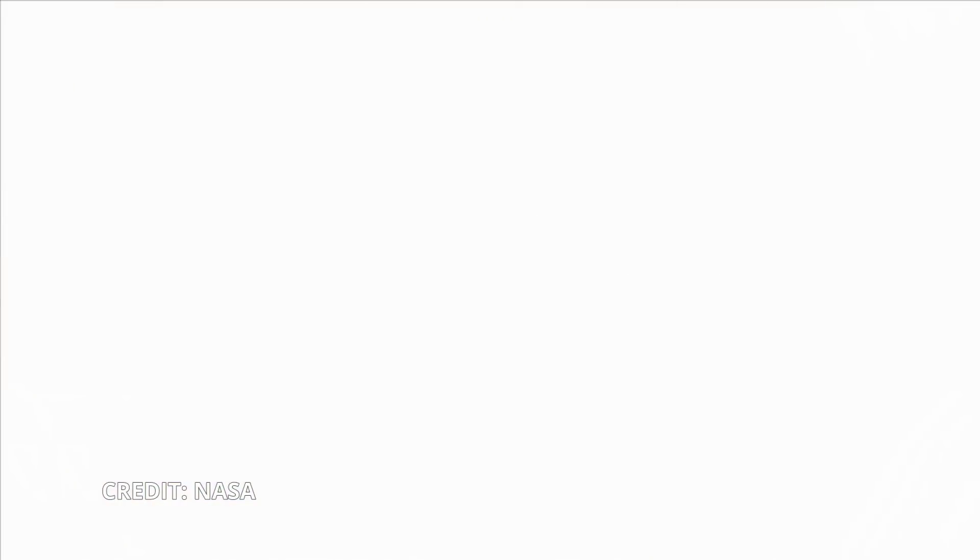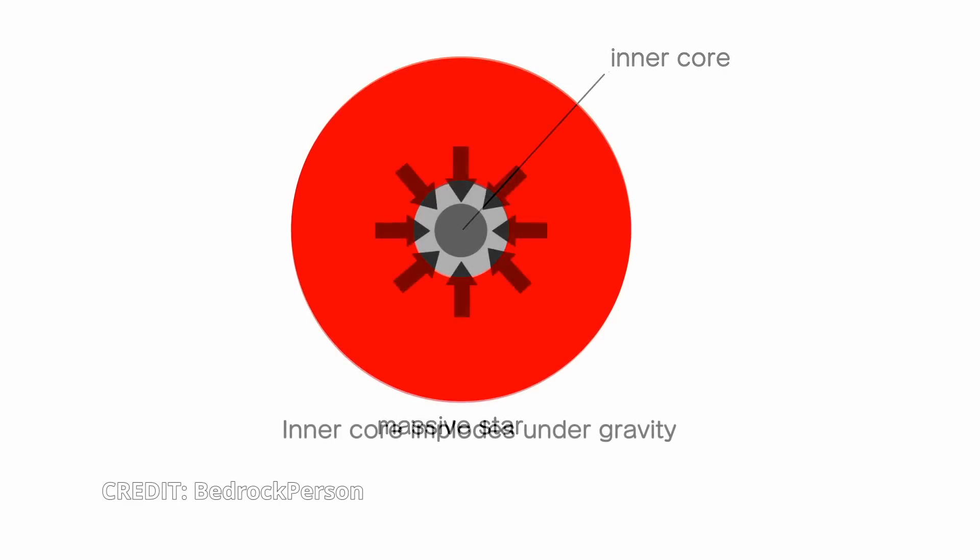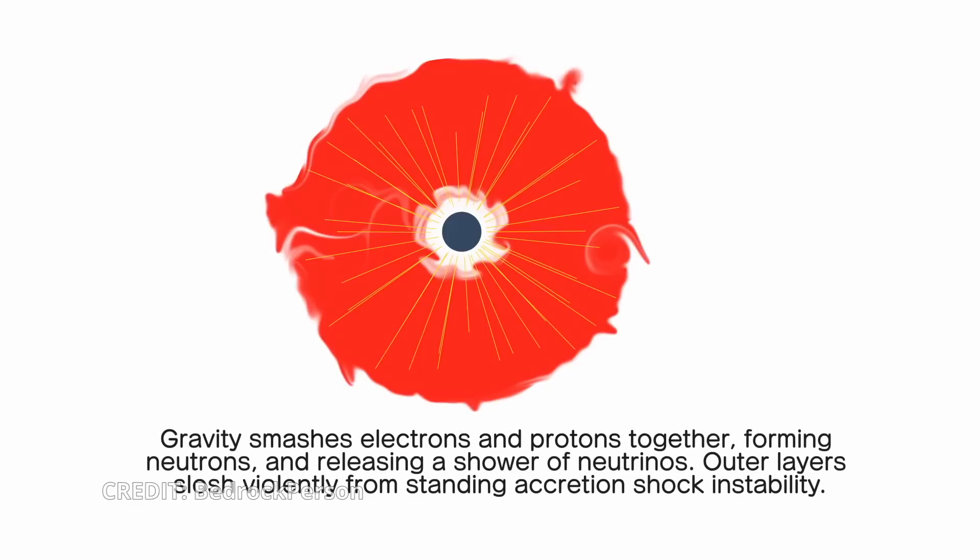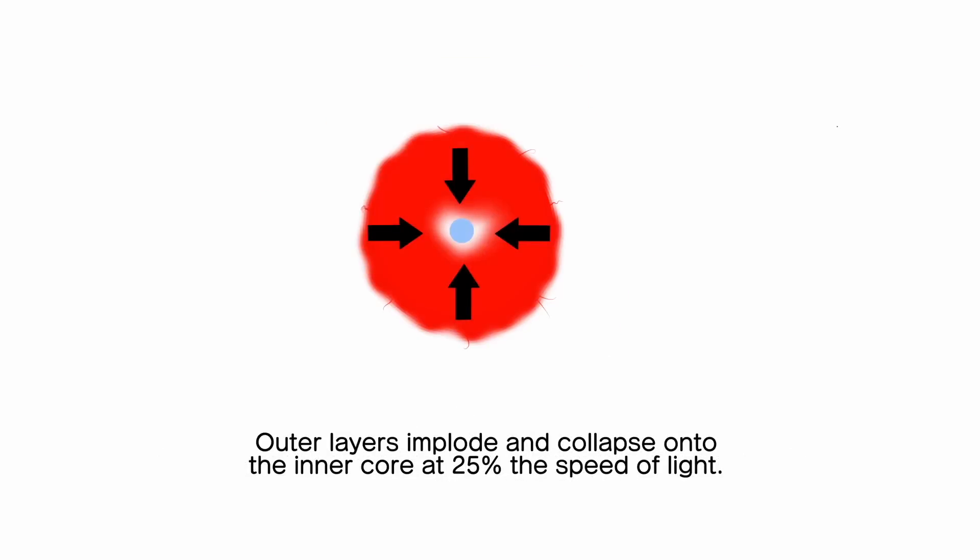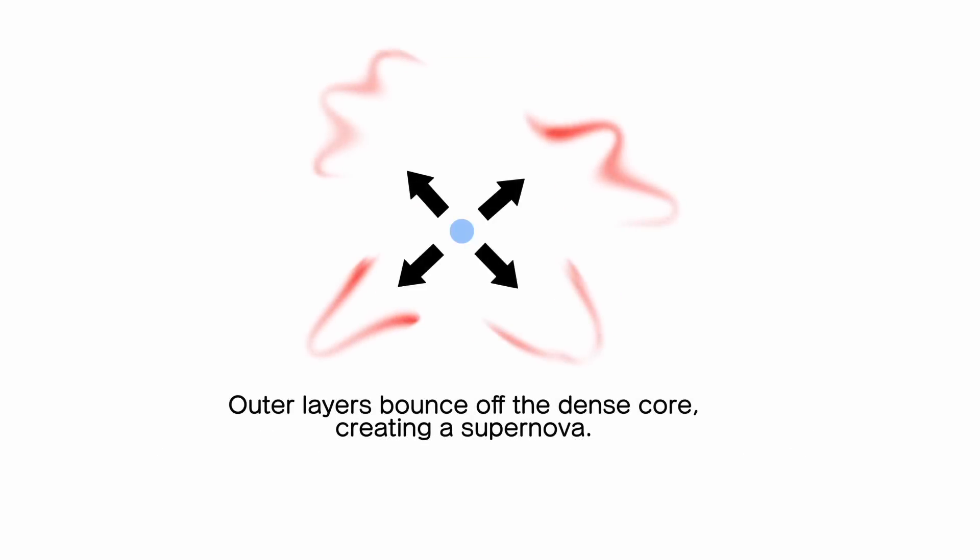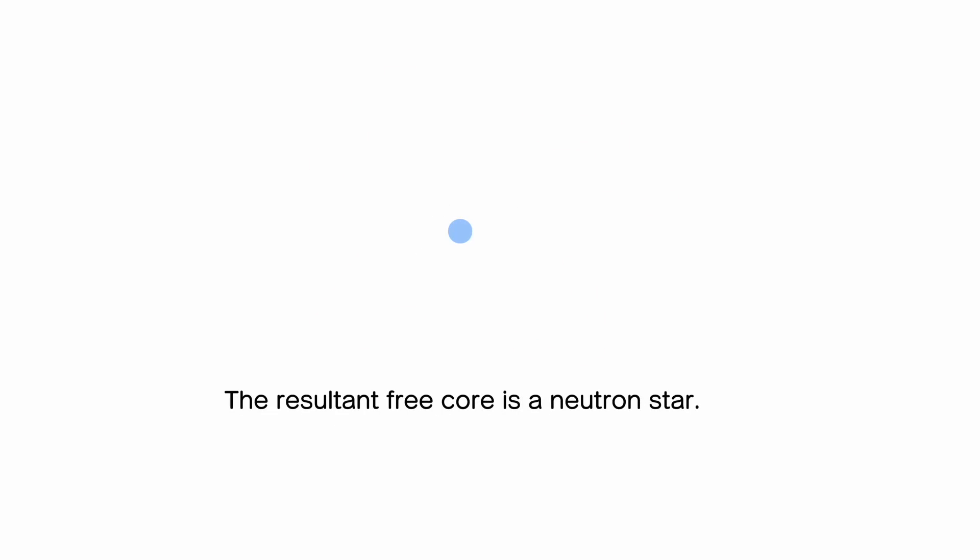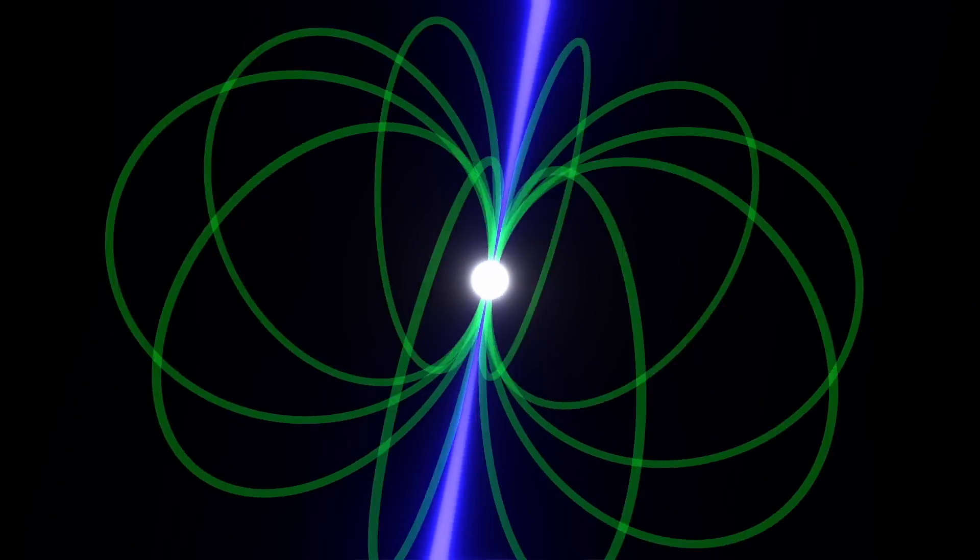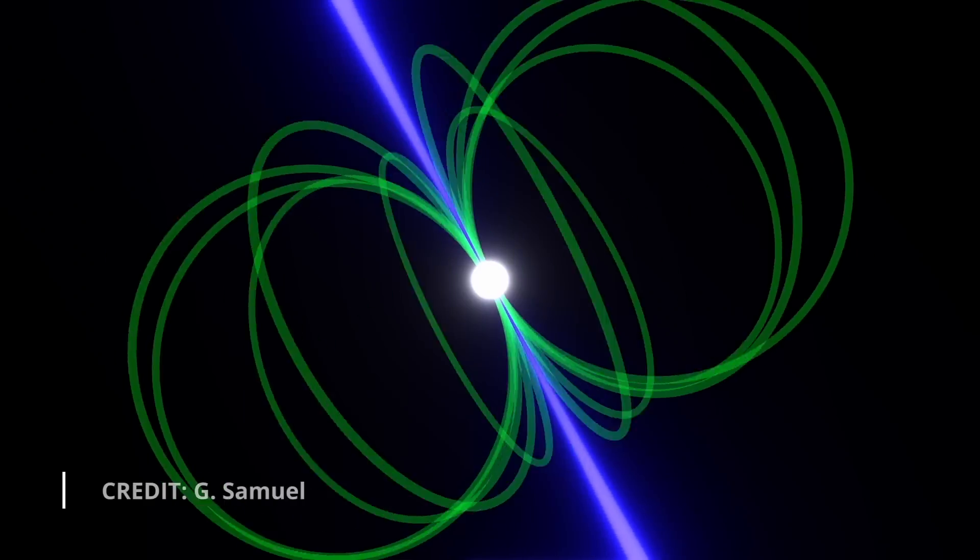The mainstream idea is that these objects are the remnants of a supernova explosion. The central region of the star collapses, crushing together every proton and electron into a neutron. The dense core of the star is all that is left. The angular momentum of the original star is conserved, meaning the much smaller object has to rotate at an incredible speed.